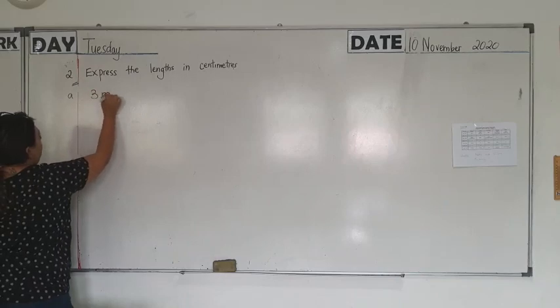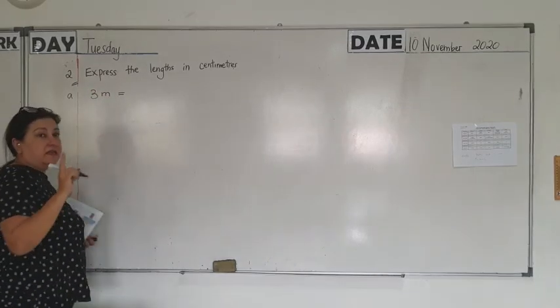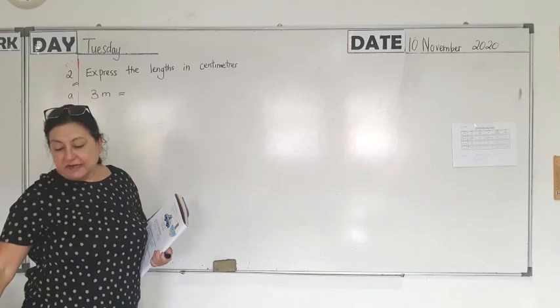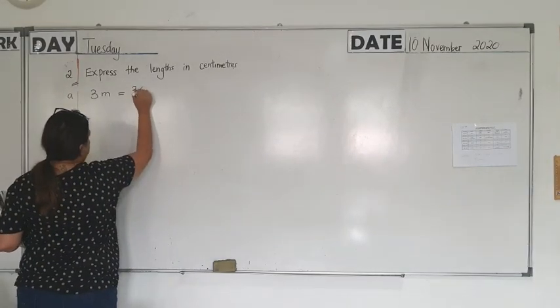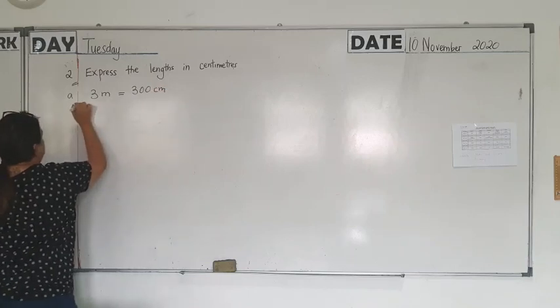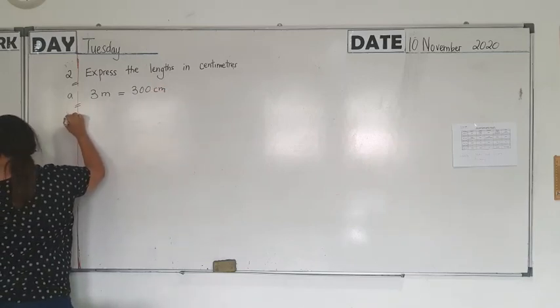Now leave a line and write down A, 3 metres. So 1 metre is 100 cm, 3 metres is 300 cm. Then leave a line.